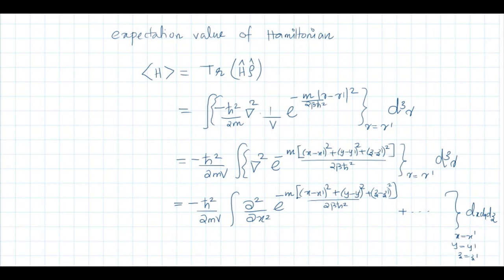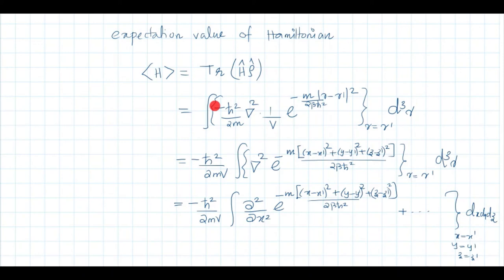We can calculate the expectation value of the Hamiltonian: ⟨H⟩ = Tr(H·ρ). Substituting H = -ℏ²/(2m)∇² and ρ = (1/V)e^{-m|r-r'|²/2βℏ²}, taking the trace means setting r = r' and integrating over all r. We compute ∇² acting on e^{-m|r-r'|²/2βℏ²} evaluated at r = r'.